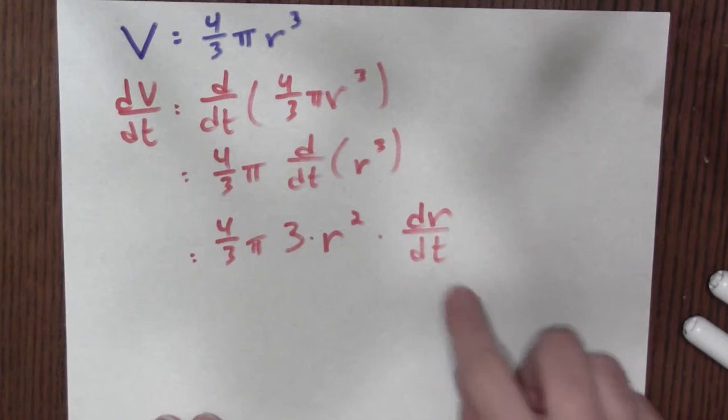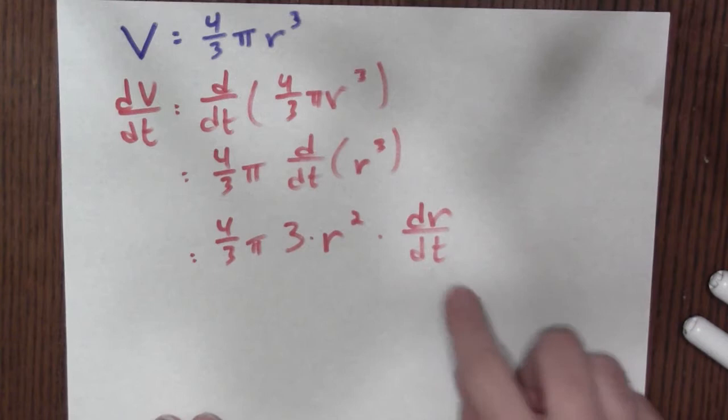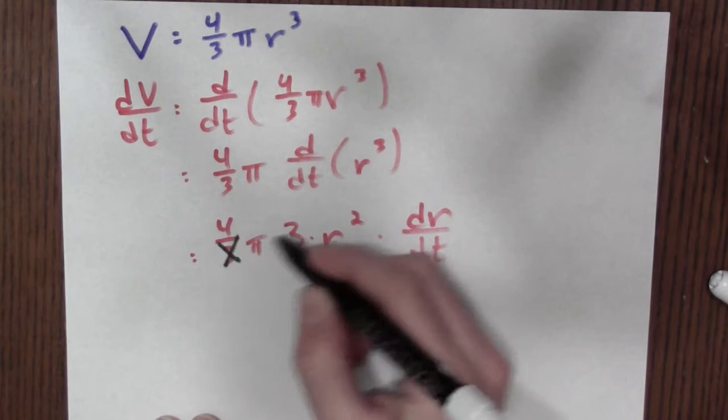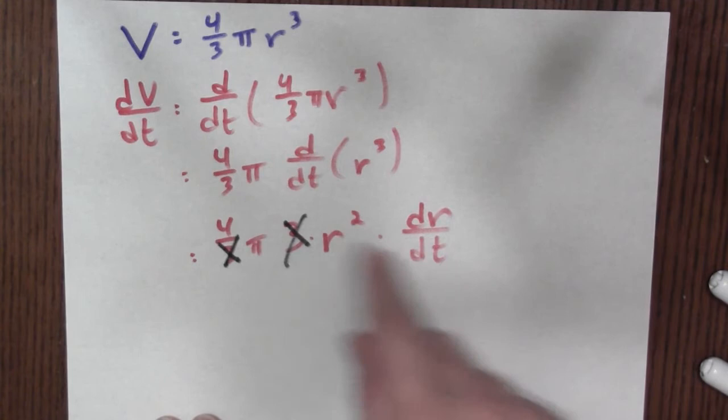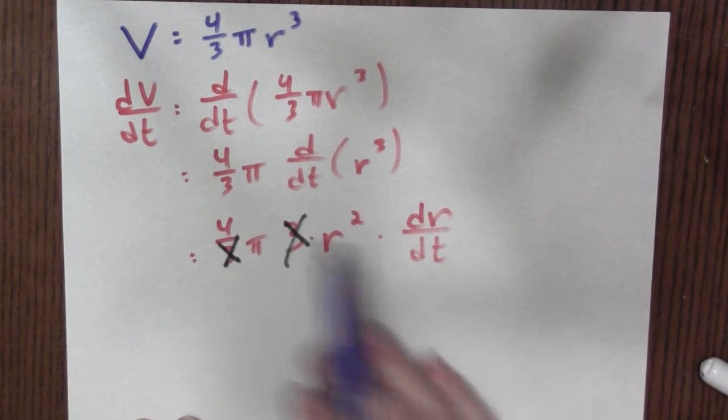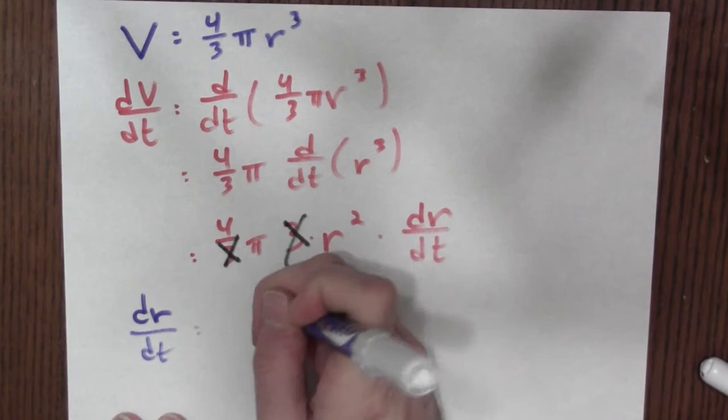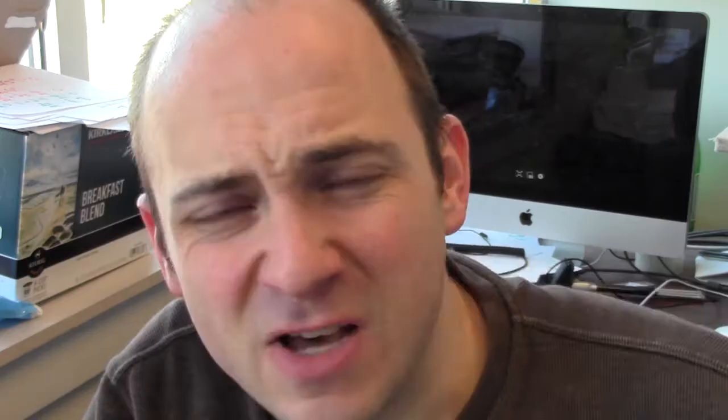Let's solve for dr/dt, the rate of change in the balloon's radius. First thing I can do is I've got a dividing by 3 and a multiplying by 3, so I don't need to do both operations. So this is 4πr² × dr/dt. The other side is just dV/dt. I'll divide both sides by 4πr², and I find that dr/dt = dV/dt ÷ (4πr²).